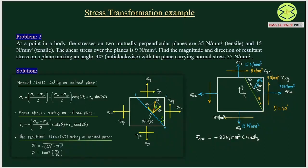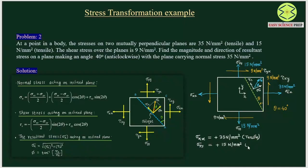If the given condition had a compressive sigma_xx, compared with the standard expression where sigma_xx is tensile, the compressive would be negative. But since in the actual situation both are in the same direction, sigma_xx is positive. Similarly, sigma_yy is 15 N per mm² tensile, and in the standard case it is also tensile. So sigma_yy is positive 15 N per mm².